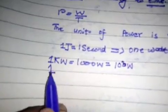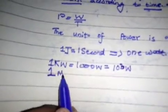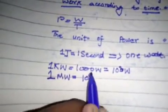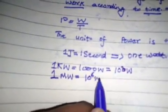And one megawatt is equal to 10⁶ watts, or 1 MW = 10⁶ W.